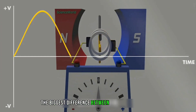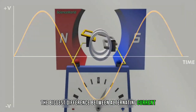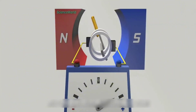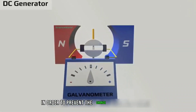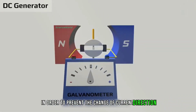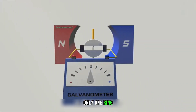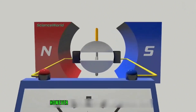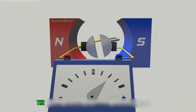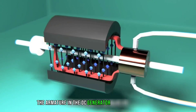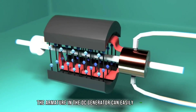The biggest difference between alternating current and direct current is the direction of current. In order to prevent the change of current direction in a DC generator, only one ring called a split ring is used in the slip ring part. However, the friction between the brush and the armature in the DC generator can easily cause wear.